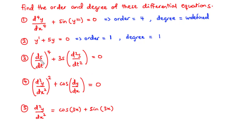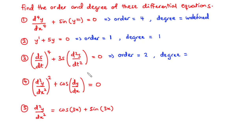Now to the third example. Here we have the first derivative and the second derivative. Out of these two, the second derivative is the highest. Therefore, the order of this differential equation is 2. To find the degree, we locate the highest order derivative and find the power to which it is raised. The power is 1. Therefore, the degree of this differential equation is 1.